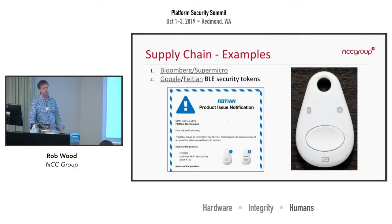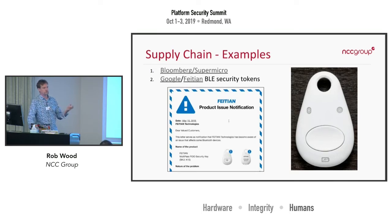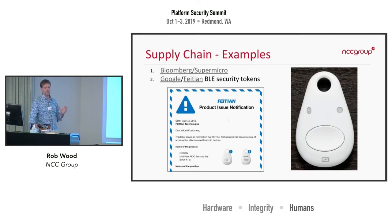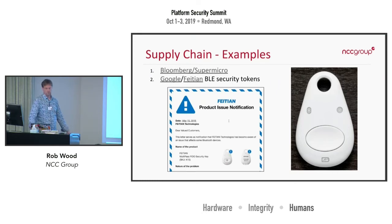A second example: Google made two-factor authentication tokens that were Bluetooth-enabled. What people found is that there's a default test key in the Bluetooth spec for testing your device, and on these actual products that test key was hard-coded in. So anyone who knows it could connect to these devices and use them on your behalf. Google and Feitian did a huge product recall. The problem was Google contracted this out entirely — they had no control over the manufacturing or testing process and didn't know what they were getting. Incidentally, it wasn't just Google's product that had the problem — all of Feitian's products were recalled.